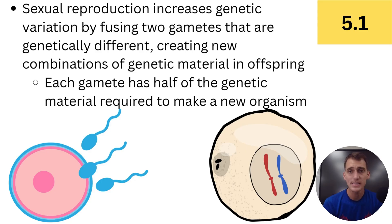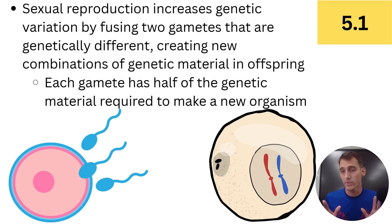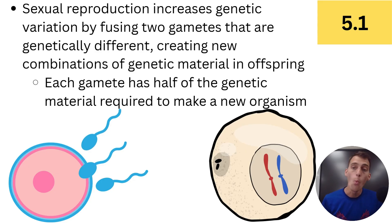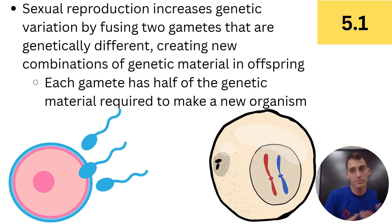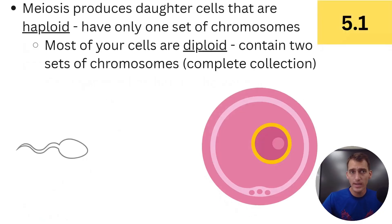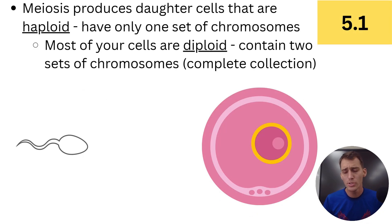Each gamete has half of the genetic material required to make a new organism. To contextualize this for human beings: most human cells have 46 chromosomes — or two sets of 23. One set was inherited from your biological mother and one set from your biological father. So your 46 chromosomes are made up of combinations from mom and dad, and your offspring will consist of 23 chromosomes from a mix of yours and 23 from your partner's.